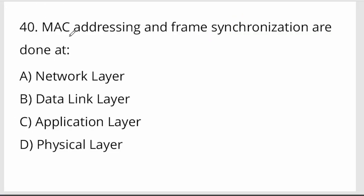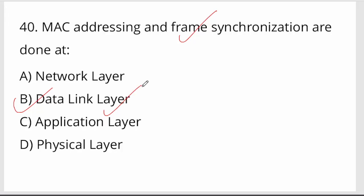MAC — media access control — addressing and frame synchronization are functions of the data link layer. Option B — data link layer.